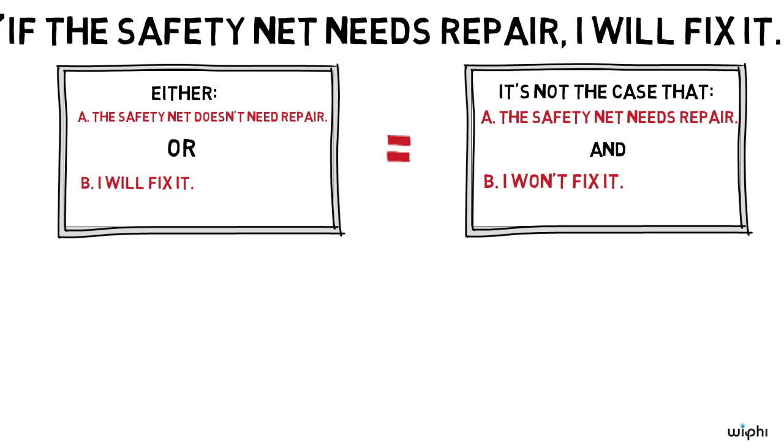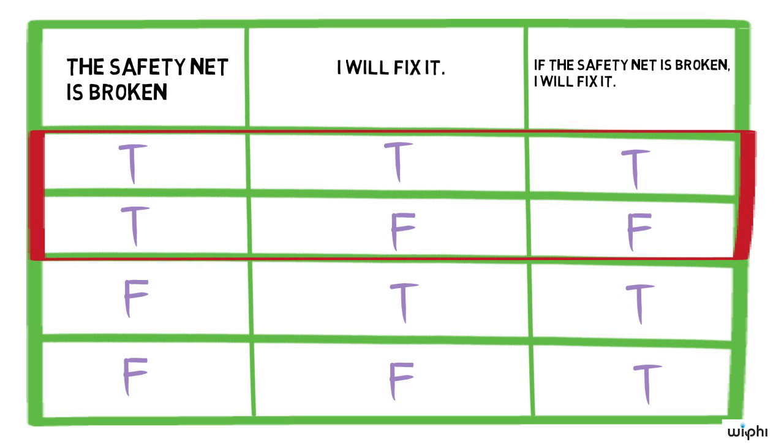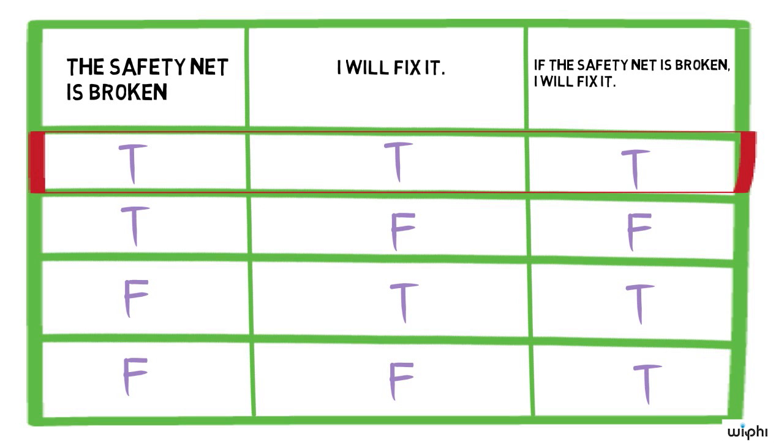We can consult our truth table to help us better understand what's meant here. The first two lines of the truth table tell us what truth value the conditional has when the safety net needs repair. In particular, line one tells us what truth value the conditional has when both the safety net needs repair and Romney fixes it. Notice that it says that the conditional is true in this case.